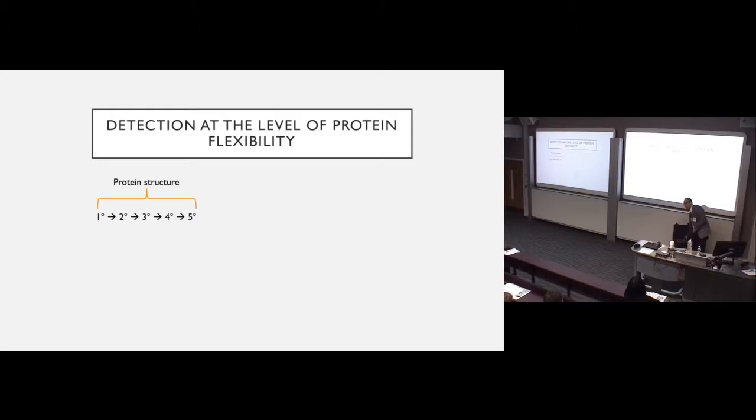The reason our approach, I guess, is so powerful, and I can back up my claims, is because our detection approach is completely unique. Our approach actually detects the level of protein flexibility. So we all know that proteins are made up of primary, secondary, tertiary, quaternary, and even something called quinary structure. That's how protein structure interacts with its environment. But what governs everything at every level of protein structure is actually the molecular flexibility of your protein.